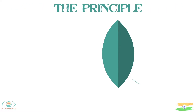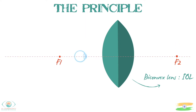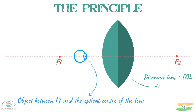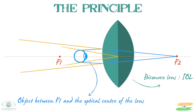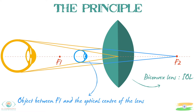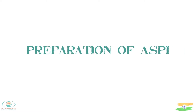Let's look at the principle of a biconvex lens. The biconvex lens has two focal points, f1 and f2. When an object is placed between f1 and the optical centre of the lens, it produces an image which is virtual, erect and enlarged. This principle of a biconvex lens is used to make the ASPE device.